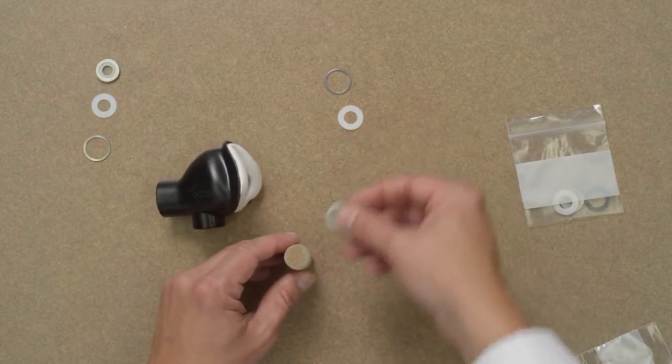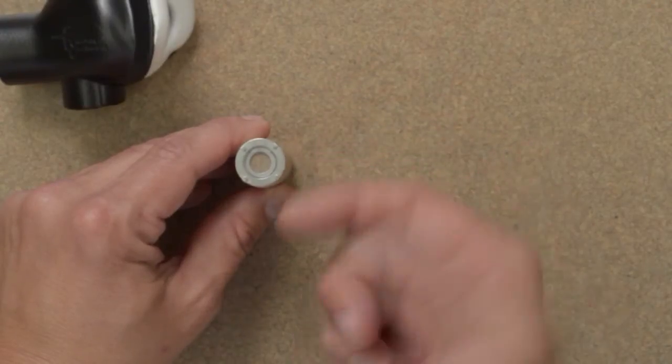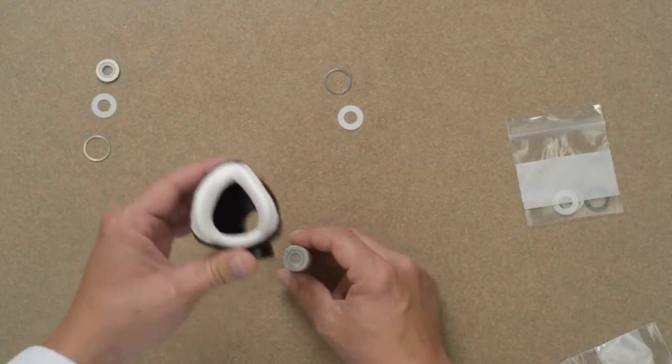First set the check valve body onto the installation tool provided. Be sure the tabs on the check valve body are facing up and that the curve of the valve flap is towards you.